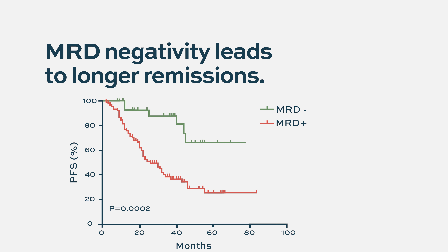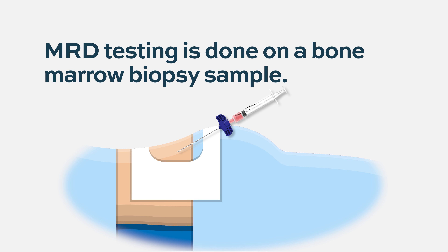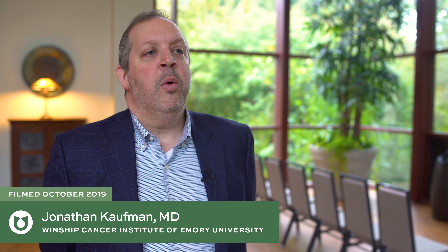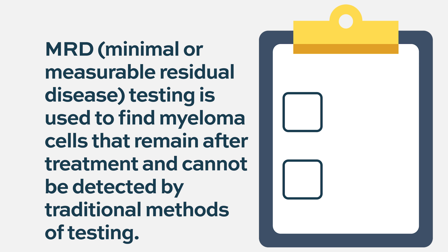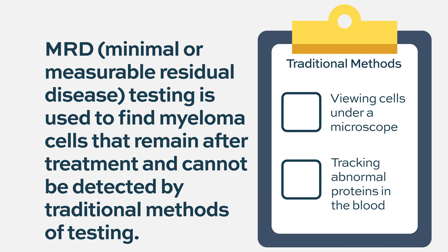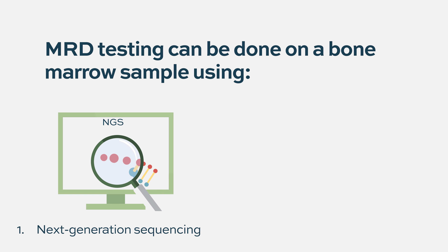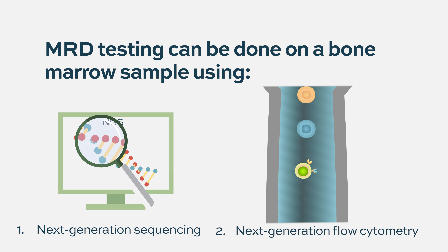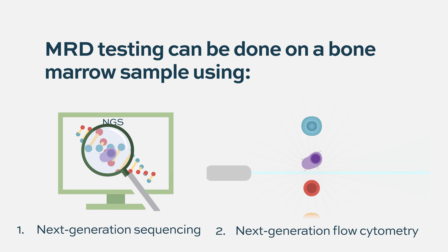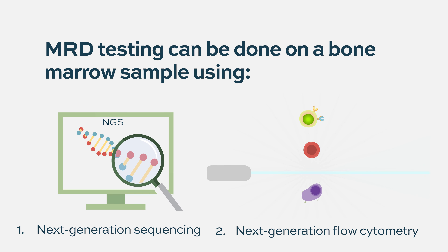It's all done on bone marrow biopsies — at least as of 2019 and 2020, it's reliant on a bone marrow biopsy. In myeloma, we know there is myeloma below the level of detection of our standard therapies, and in order to look at that amount we use MRD, or minimal residual disease testing, which typically uses next generation sequencing or very sensitive flow cytometry in the bone marrow to understand if there is myeloma below what we can typically see.